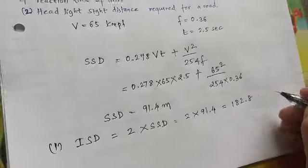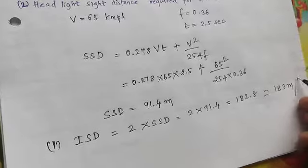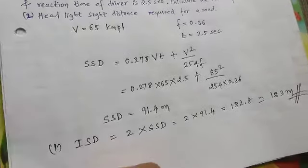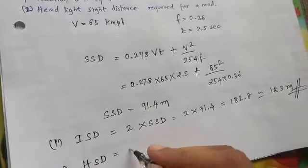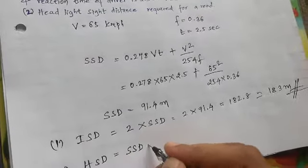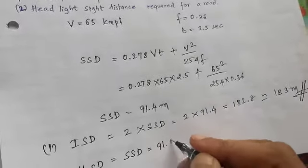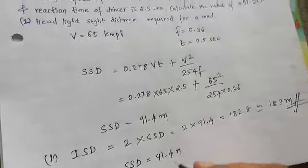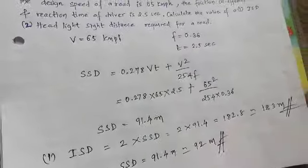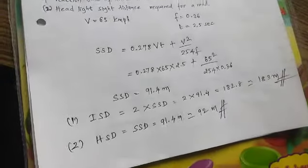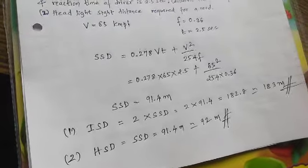And the second condition is to find the headlight sight distance. Headlight sight distance is nothing but the sight distance that will be approximately the same again. It won't be the same, 91.4 meters, or approximately 92 meters.